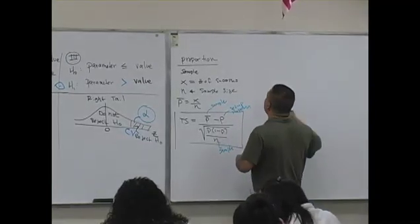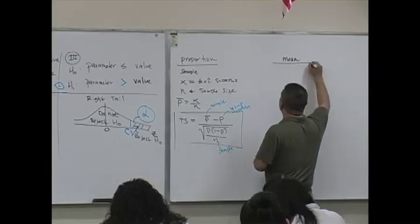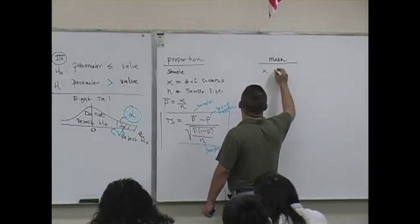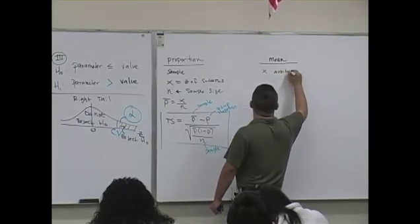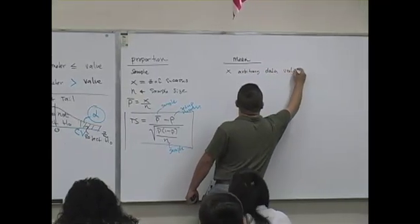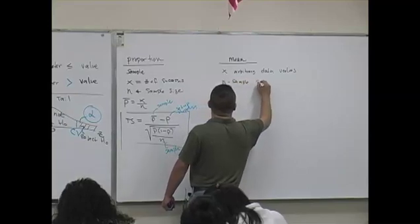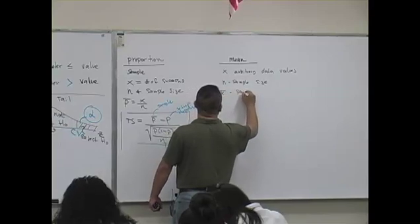And if the test is about a mean, you go out, you collect your data. X is your arbitrary data values, n is the sample size, x bar is the sample mean.